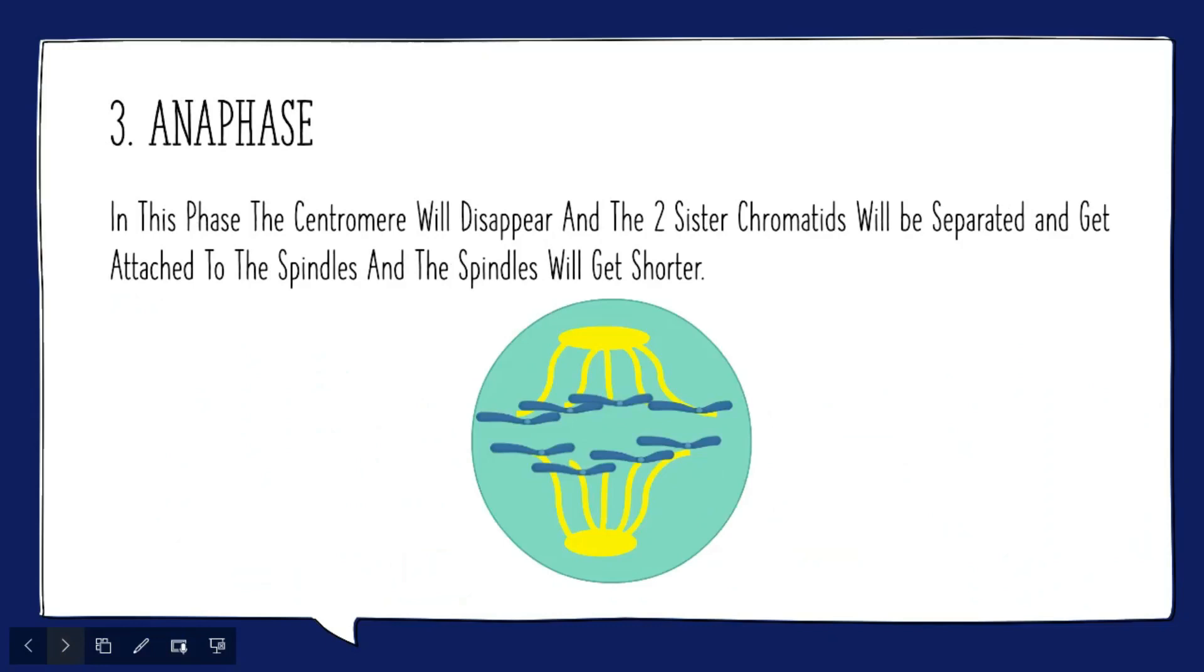Anaphase. In this phase the centromere will disappear and the two sister chromatids will be separated and get attached to the spindles and the spindles will get shorter.